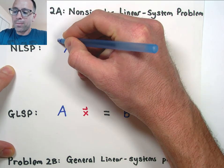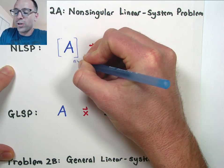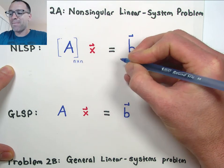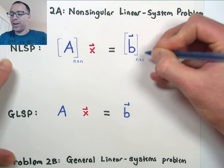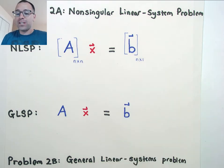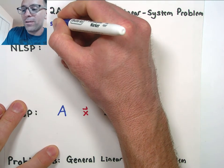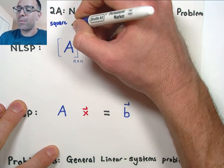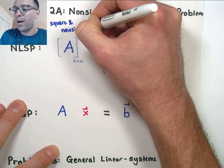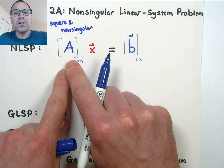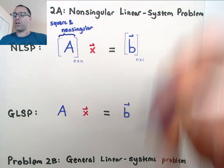Let's begin analyzing these problems by specifically writing the dimensions. In the non-singular linear systems problem, the matrix A was an N by N matrix and vector B was an N by 1 vector. We had something very special happening with matrix A — it was square, meaning the number of rows equals the number of columns, and non-singular, meaning all the columns of that matrix are linearly independent.